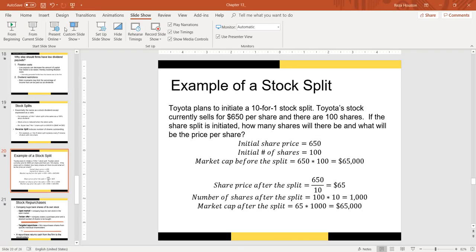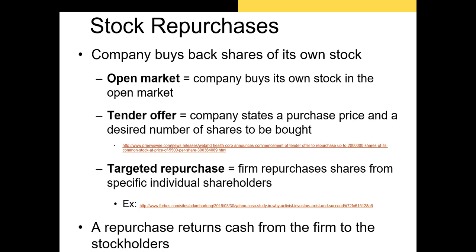Now let's talk about the other way firms distribute cash to shareholders: the stock repurchase, sometimes called a stock buyback. It occurs when a firm uses its own cash to buy back its own shares, and it does this in three main ways. First, through an open market purchase, where the firm buys back its shares on the exchange where those shares are traded — the NASDAQ, New York Stock Exchange, or another exchange. The second method is through a tender offer, where a firm puts out an announcement to shareholders that it's willing to pay a premium to buy back its own shares.